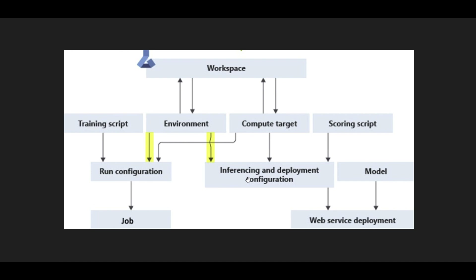As you can see in this picture, we have our Azure Machine Learning Workspace on the top. When we want to train a model, the first thing is having your training script. But in order to run your training script, you need to specify some run configurations — for example, what is the compute target, is it a CPU-based cluster or GPU? One of the specific things you need to add in your run configuration is the environment, which means what packages you need, what Docker-based image, what Python version, and whether you need any Spark context. Defining all those packages and configurations is called an environment in Azure Machine Learning Workspace.